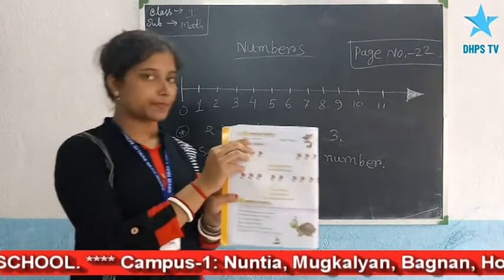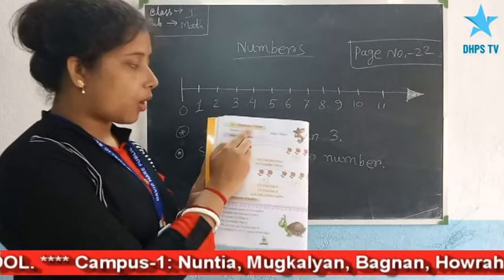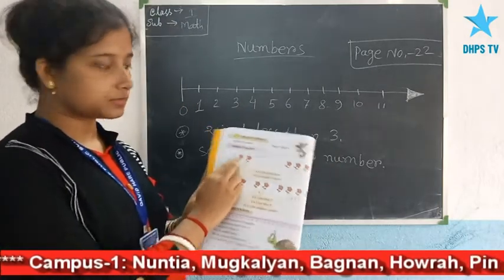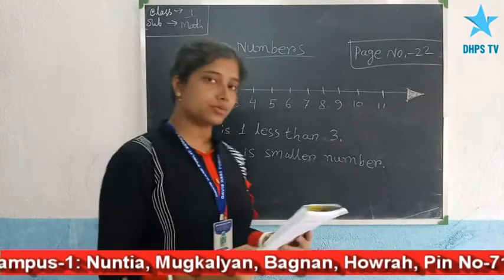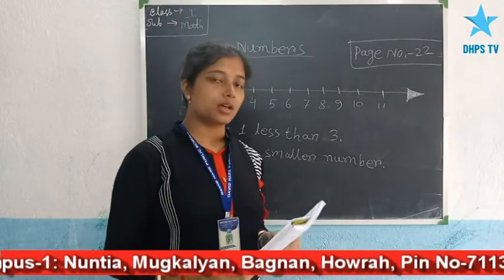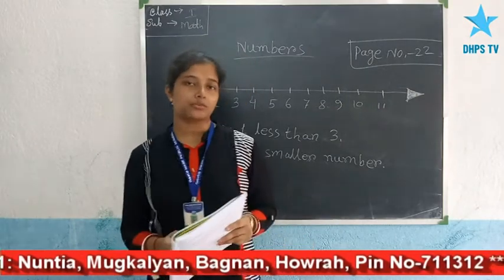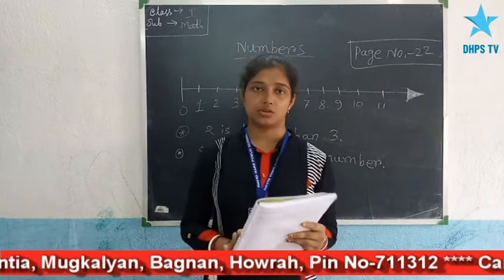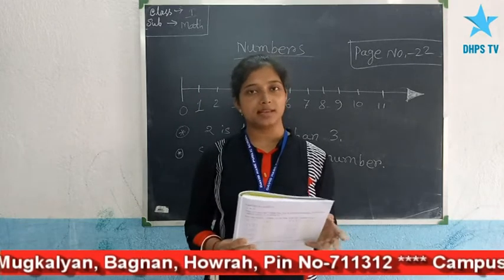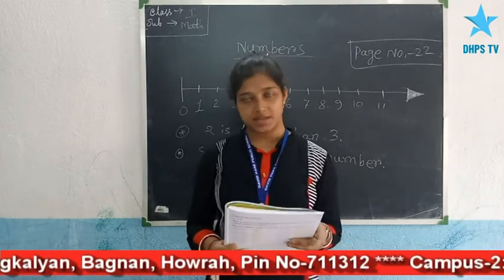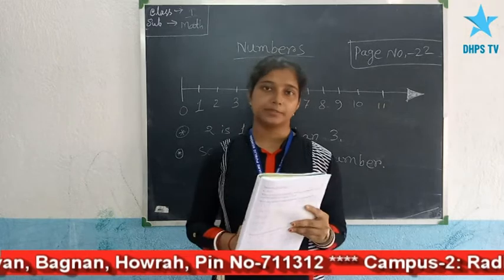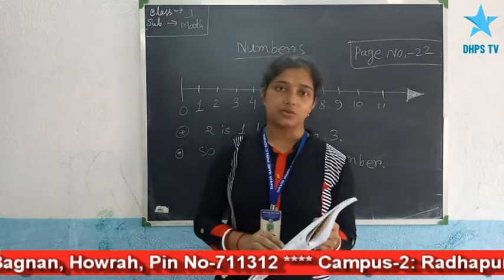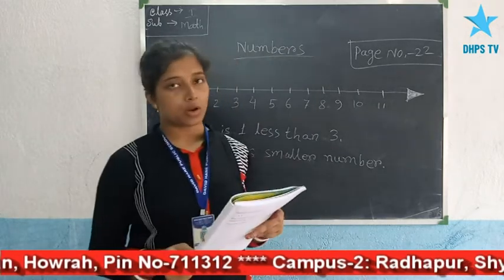The topic is Comparison of Numbers. You can see the headline: Comparison of Numbers. We can compare two numbers on the basis of two different methods: smaller and smallest, and bigger and biggest. And today you will learn about the concept of smaller and smallest.